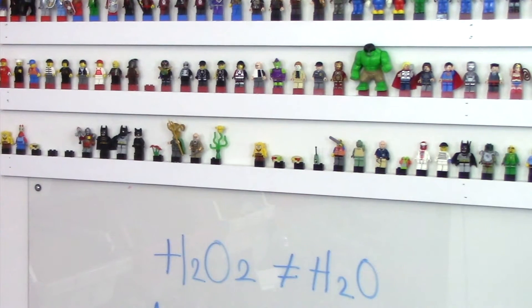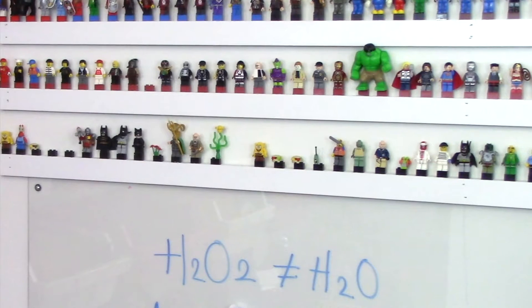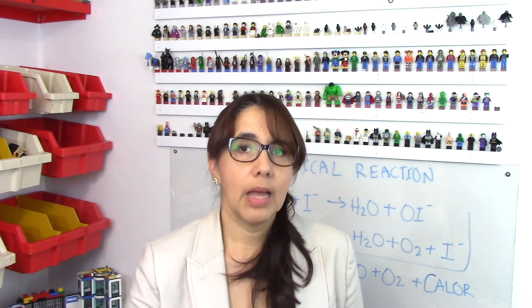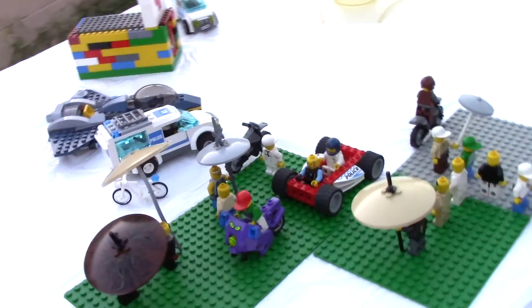You can drink water — in fact, you need it to live. But if you drink hydrogen peroxide, you die. It's a poison. And the difference is only one atom of oxygen: H2O and H2O2. That extra atom of oxygen makes it a completely different substance.